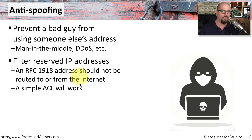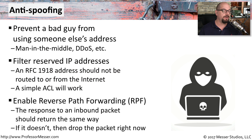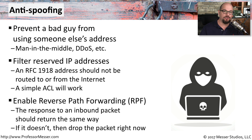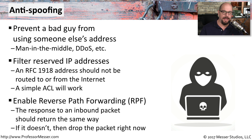A simple access control list will work to filter out that traffic. You can also configure your router with RPF — Reverse Path Forwarding — meaning any inbound traffic will be responded to across the same interface going out. If somebody is spoofing traffic, they may send traffic inbound while your routing table sends it outbound on a different interface. Configuring Reverse Path Forwarding can prevent anyone from taking advantage of that routing situation.